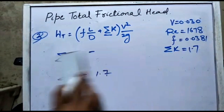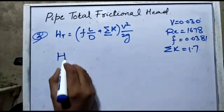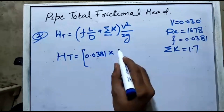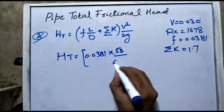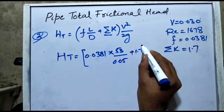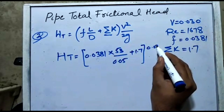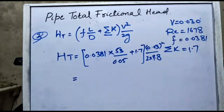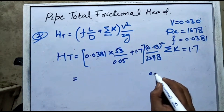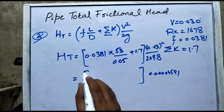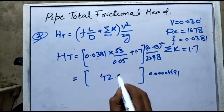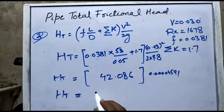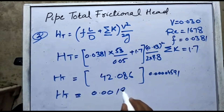All values are now known: f = 0.0381, L = 53 m, d = 0.05 m, ΣK = 1.7, v = 0.03 m/s, g = 9.8 m/s². Computing the bracket: (0.0381 × 53/0.05 + 1.7) = 40.386 + 1.7 = 42.086. Then multiplying by v²/2g: 0.03²/(2 × 9.8) = 0.0000459. This gives a total frictional head of approximately 0.00193 m.